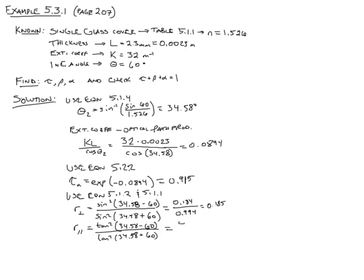Tan squared of 34.58 minus 60 divided by tan squared of 34.58 plus 60, which gives us 0.226 divided by a very large number, 155.8. So we end up with a very small number for the parallel component, 0.001.